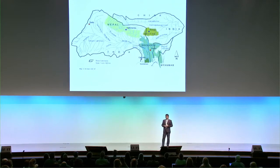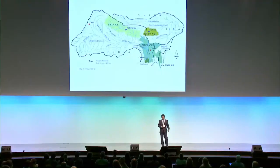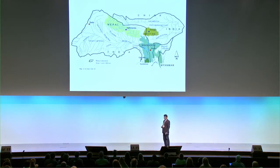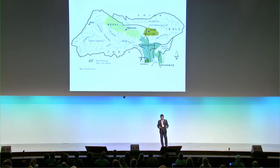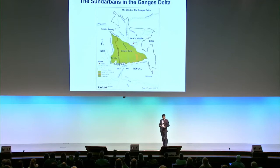Bangladesh is located in the catchment area of three of the largest rivers: the Ganges, the Brahmaputra, and the Meghna. These three rivers enter Bangladesh, and the Sundarbans is located at the mouth of the Ganges River. The Sundarbans mangrove spans both Bangladesh and India, with a border area in between. The Ganges River plays a vital role in protecting the balance of the ecosystem and its services. One-third of Bangladesh's land is part of this Ganges Deltaic area.